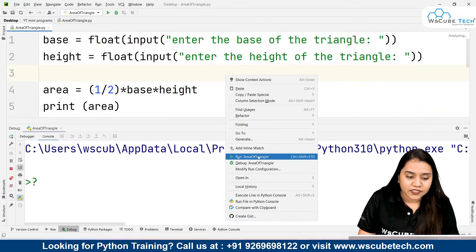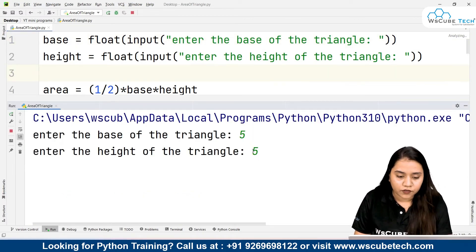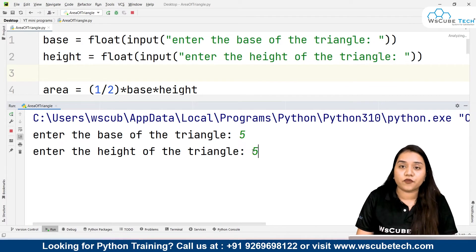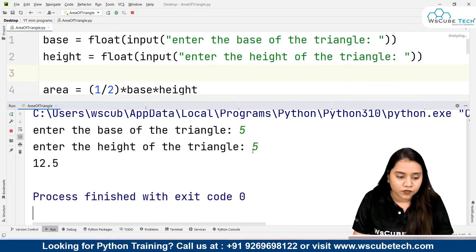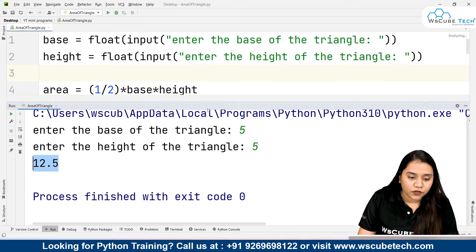If I try it with some other value, let's say if I run it again and write 5, so 5 times 5 is 25, half of 25 is 12.5. So 12.5 is the value.